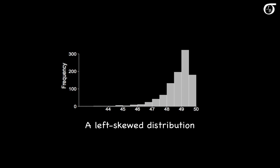Here's a left skewed distribution. Here again the median is the value of the variable that has half the observations to the left and half the observations to the right.